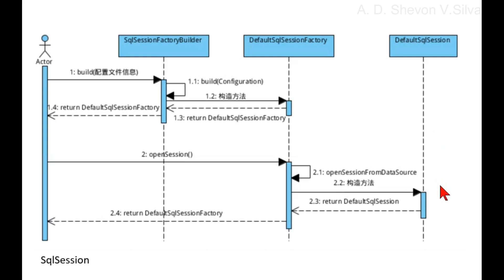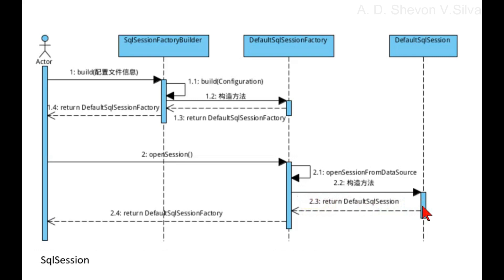Let's look at how to get a SQL Session. First, the SQL Session factory builder reads the configuration file of MyBatis and then builds the default SQL Session factory. When we get the SQL Session factory, we can get a SQL Session object through the SQL Session factory. Through the above steps, we have obtained a SQL Session object.